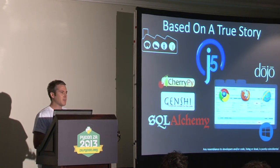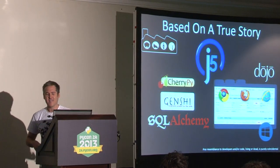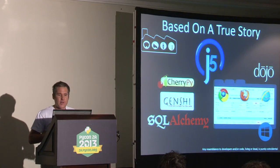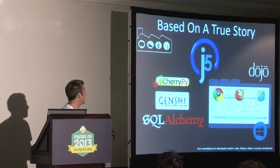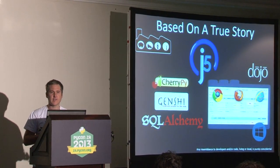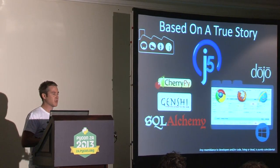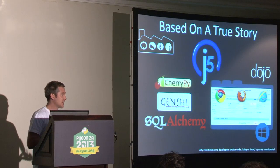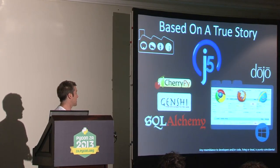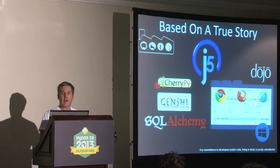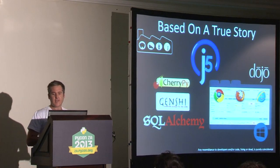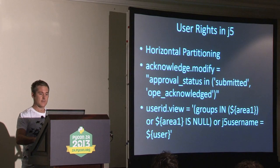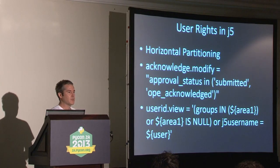On to our sad story. As I said, it's based on a true story — in the Hollywood sense, inspired by true events, with details changed for narrative clarity. In any case, j5 is our product that we sell mostly to heavy industrial plants. It is a relatively standard web application: we use CherryPy as a web server, Genshi for server-side templating, Dojo on the client side for AJAX, and SQLAlchemy as an ORM layer. Written in Python, though generally installed on Windows servers in our customers' data centers.